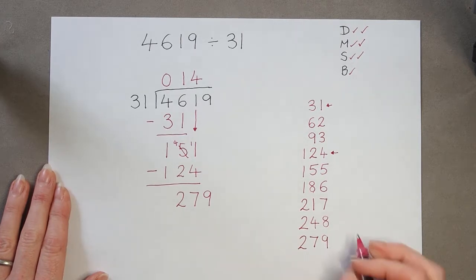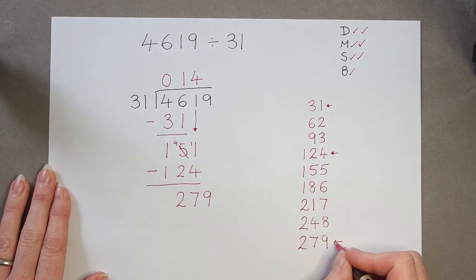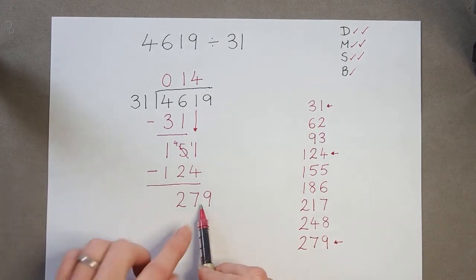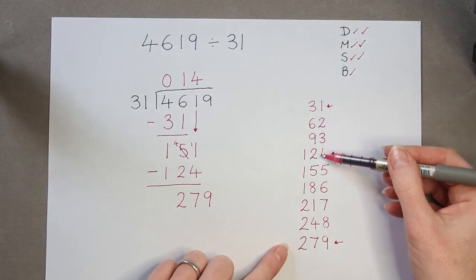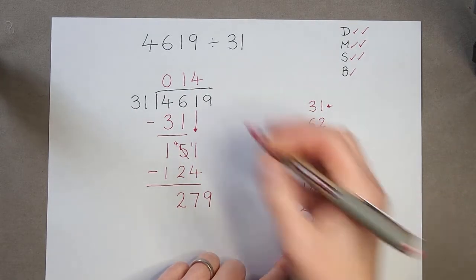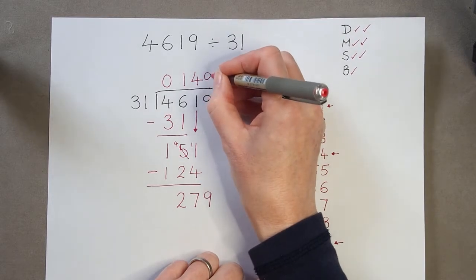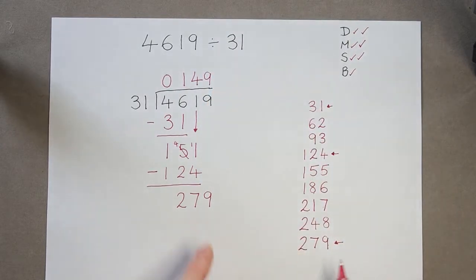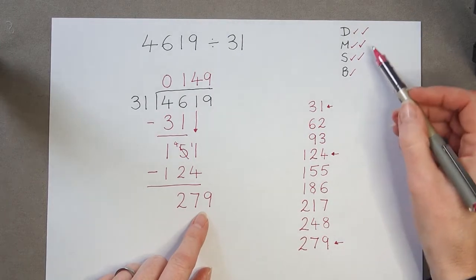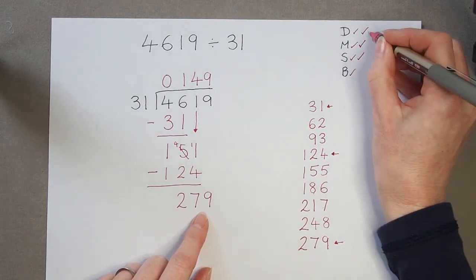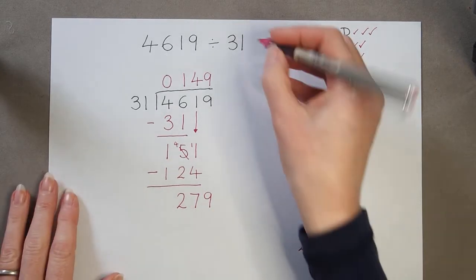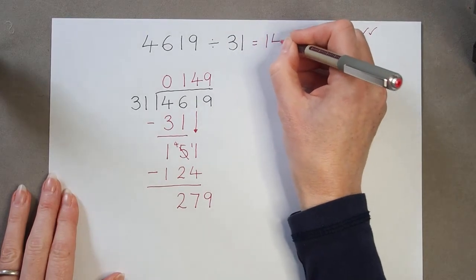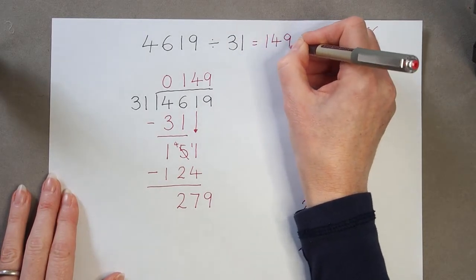279 divided by 31 is 1, 2, 3, 4, 5, 6, 7, 8, 9. It was 9 lots of 31, and there is no remainder. I can see that they're the same, so I don't actually need to go through the next steps. I've done the division. There's nothing left. I have no more digits up here to worry about, so that is the end of my calculation. The answer is 149.